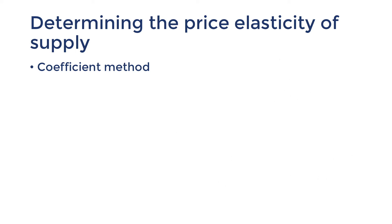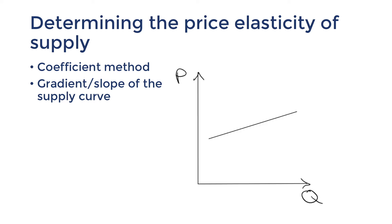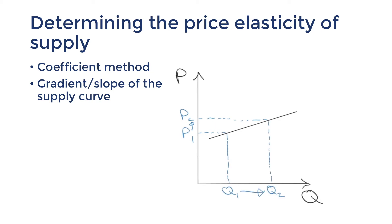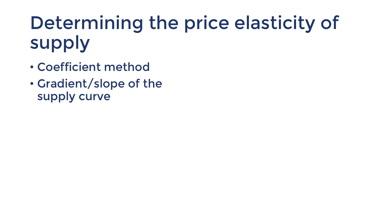Similar to demand, the elasticity of supply can be observed in the slope of the supply curve. A more price elastic supply would be flatter because a small change in price leads to a large change in quantity supplied — it's very sensitive. A more price inelastic supply would be steeper; it takes a large change in price to cause a small movement in quantity supplied because it's very insensitive. Note that you can't use the gradient to calculate elasticity because the elasticity varies along the curve. However, you can use it to compare between different supply curves.